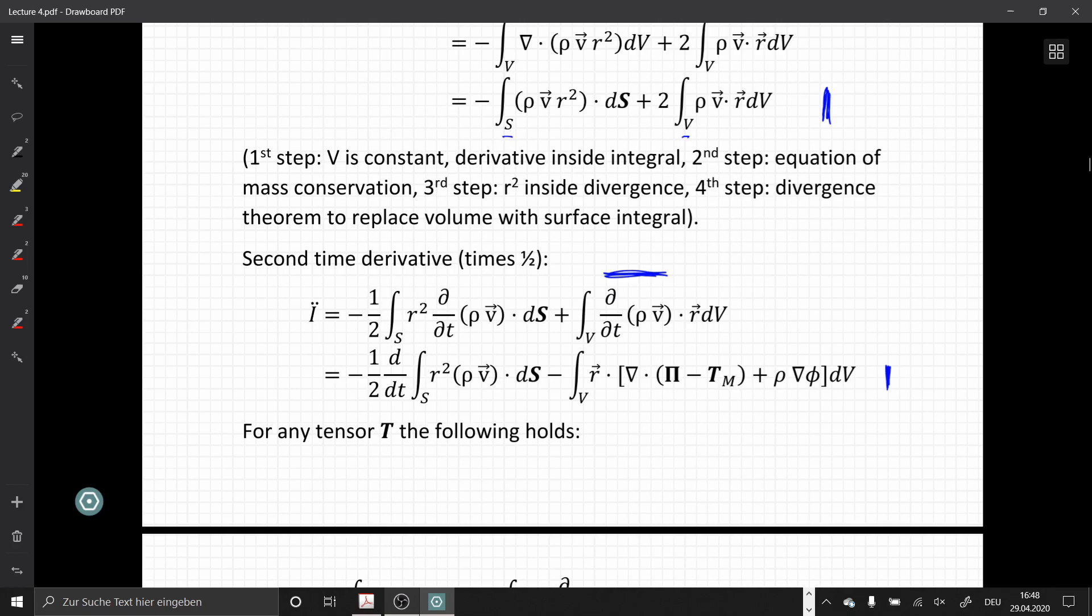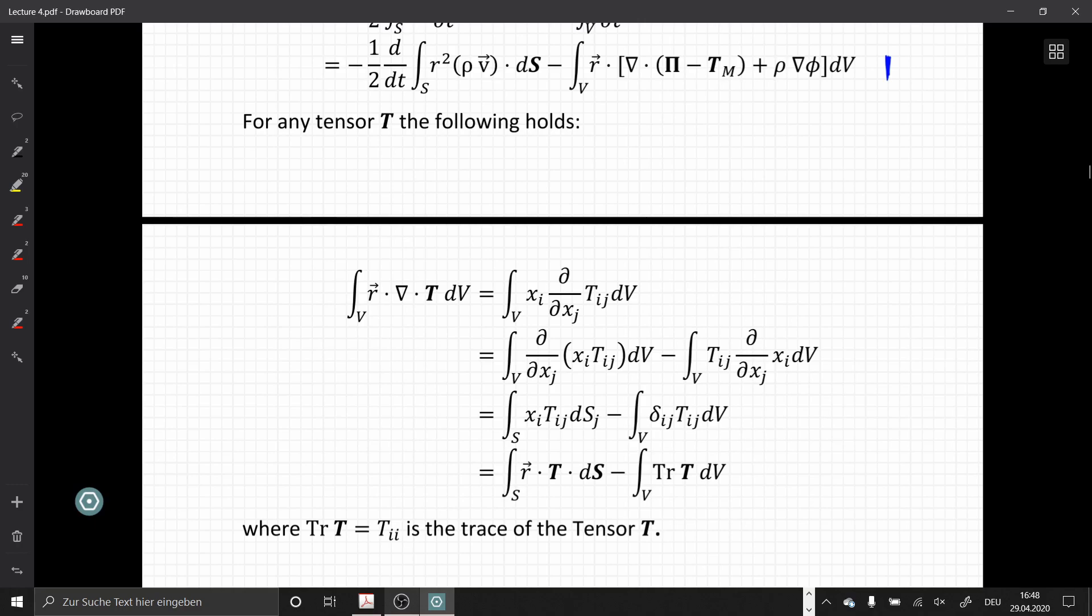Now conveniently for any tensor T the following is always true. So if we have here the vector integral of a vector R times the divergence of T, this can be written with these two integrals where we have the surface integral of R dot T dot dS minus the volume integral of the trace of T, so the diagonal elements.